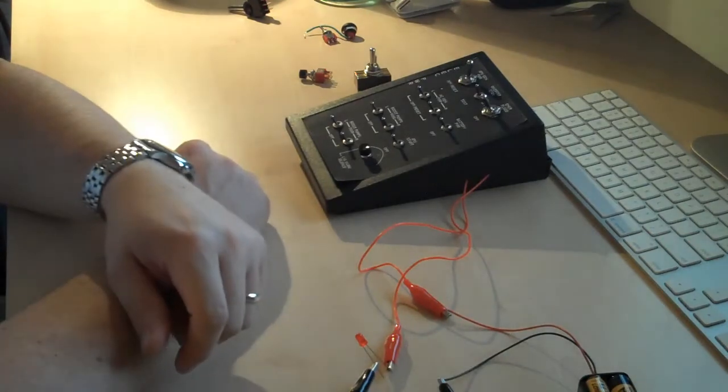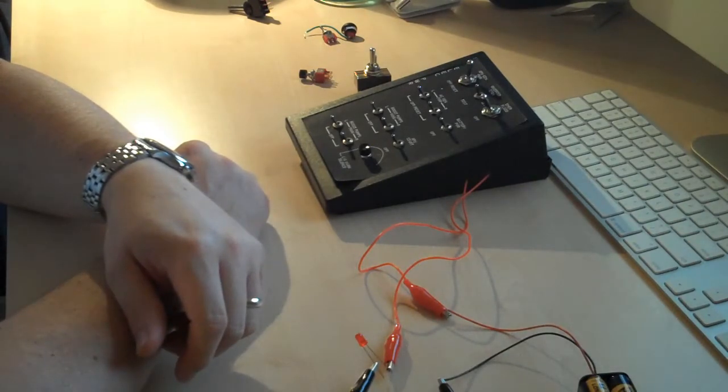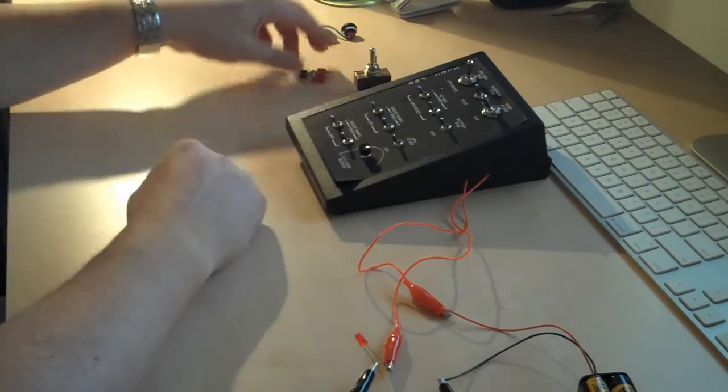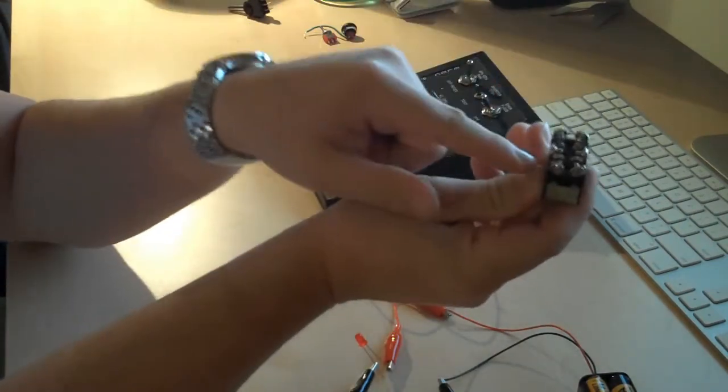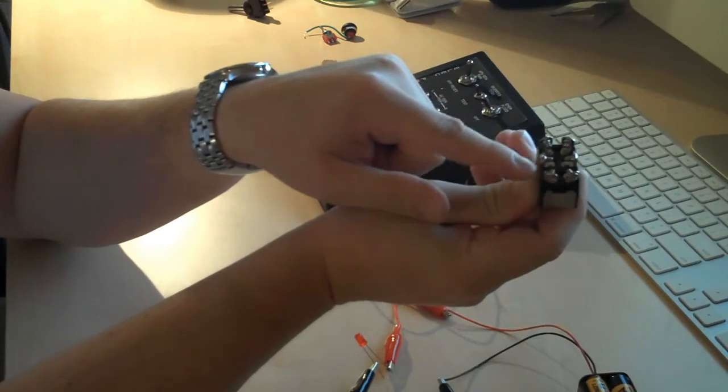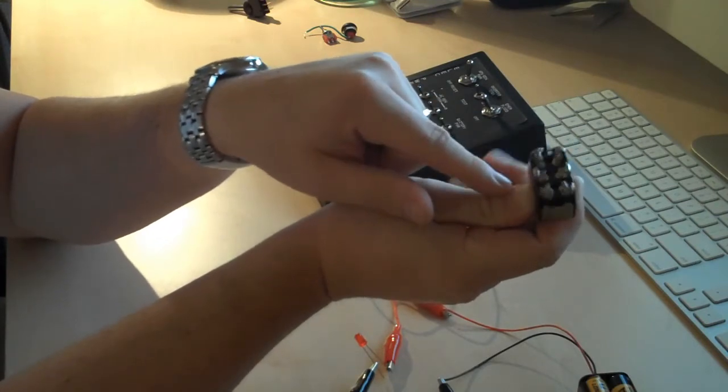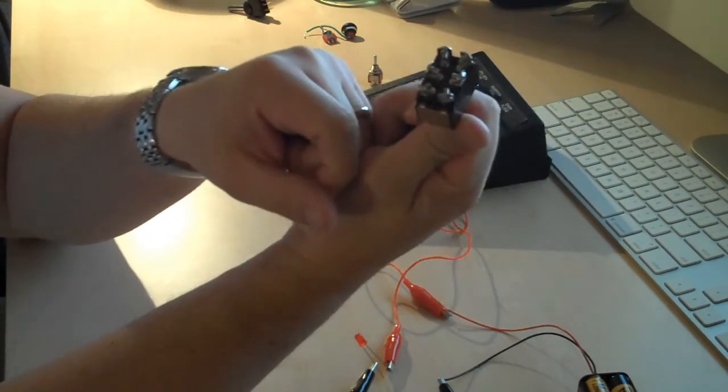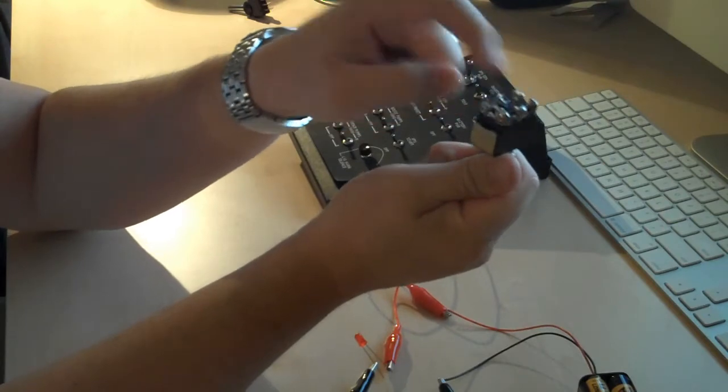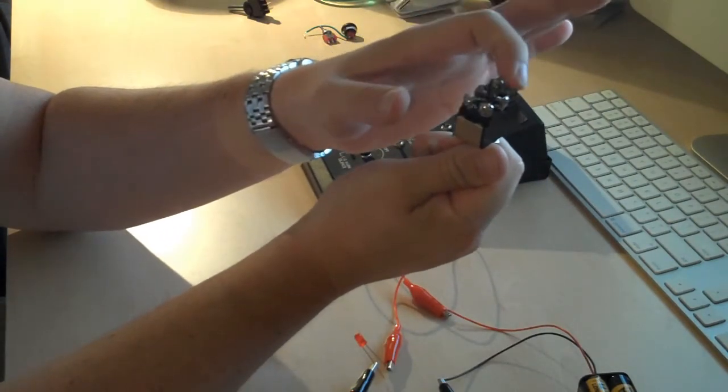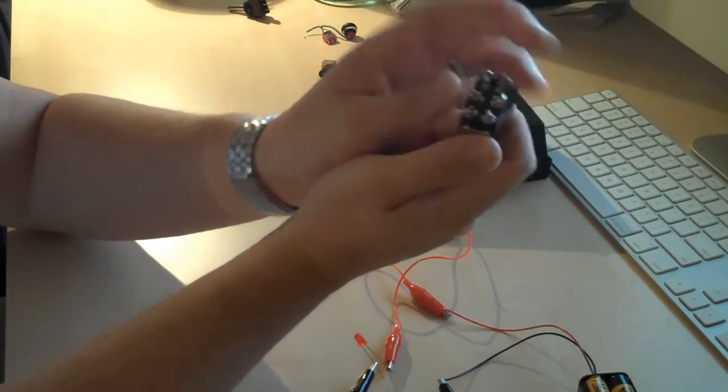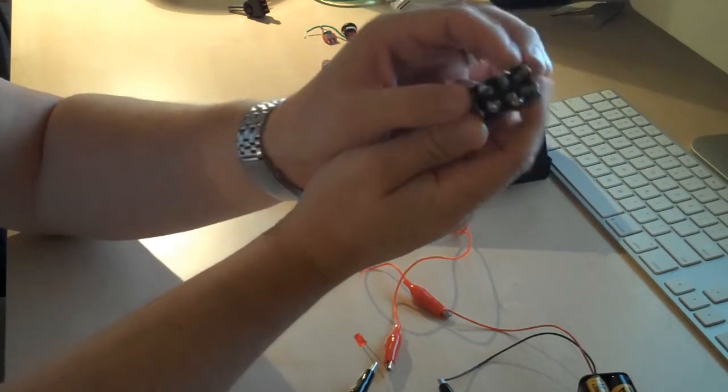I'm going to show you a double throw switch and the difference. We might also talk about poles while we're here. Poles are simply a word for these connections on the bottom. If you have a double pole switch it means that you have two sets of these. A single pole would just have these three connections. A double pole has six connections.